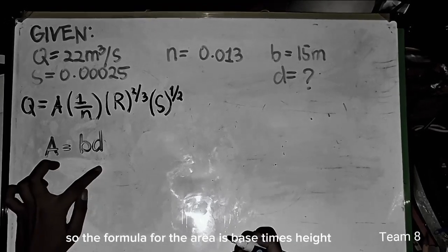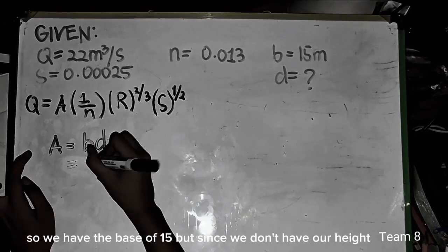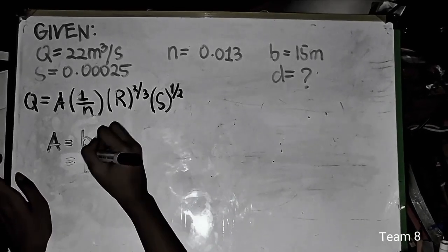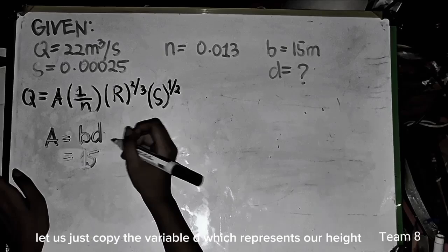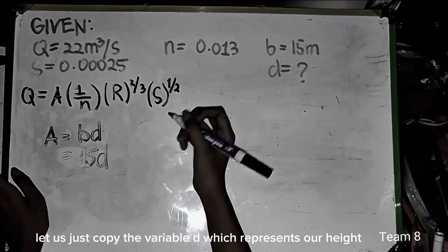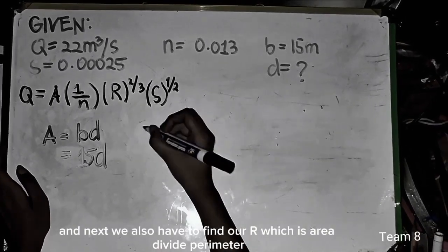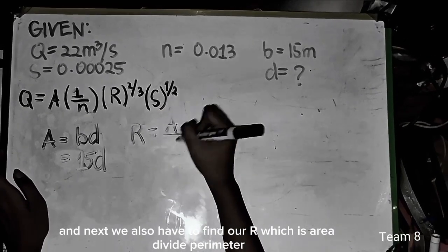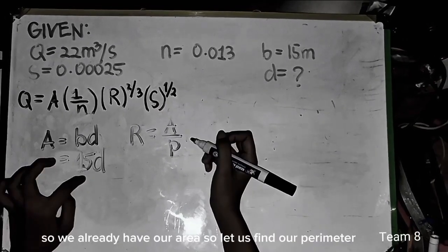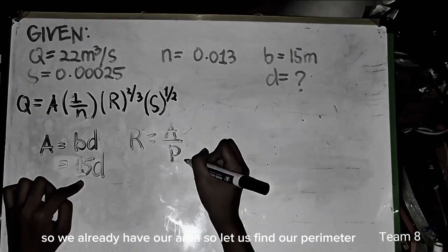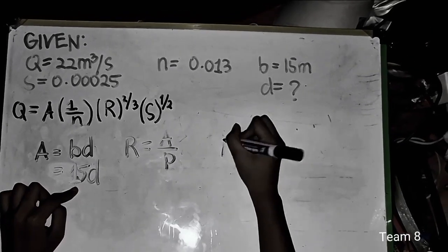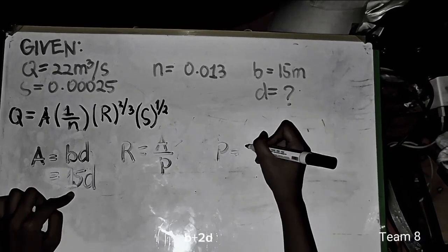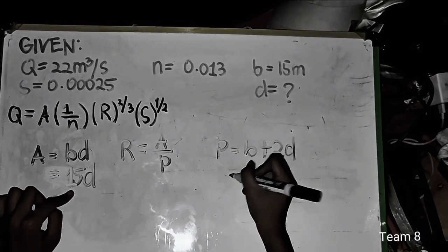So the formula for the area is base times height. So we have the base is 15, but since we don't have our height, let us just copy the variable D, which represents our height. And next, we also have to find our R, which is area divided by perimeter. So we already have our area. So let us find our perimeter, which is the perimeter of an open channel rectangle is B plus 2D.